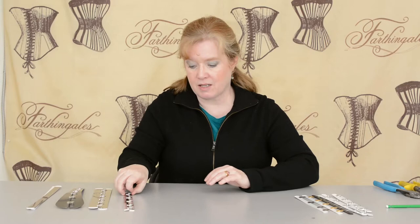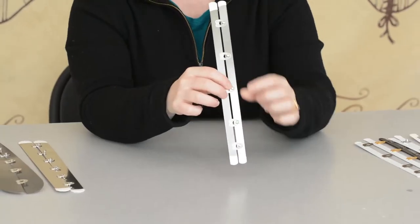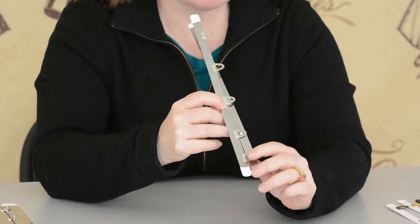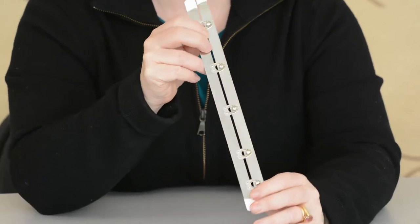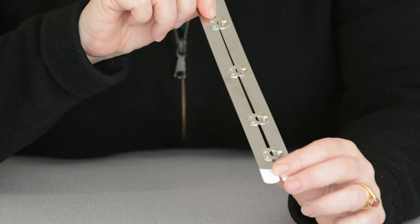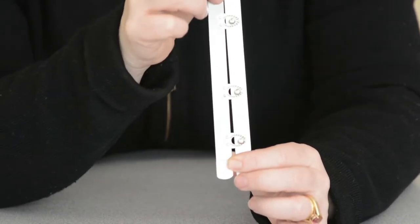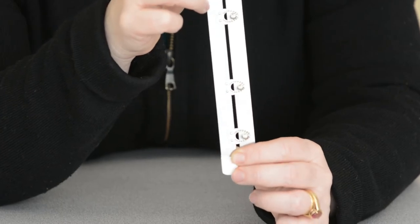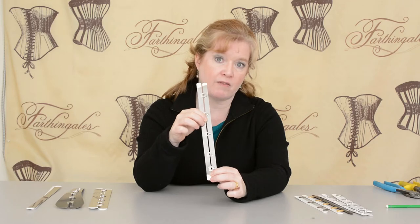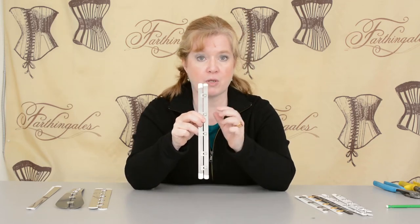A very special busk is this one. If you look at these loops, they're engraved. It's a very pretty busk, much more expensive because it's had that process done to it. There's engraving of a pattern and then paint was rubbed into that. It's a very interesting feature, and historically many busks did have engraving on the loops. Again, loops are in the right hand, knobs on the left hand.